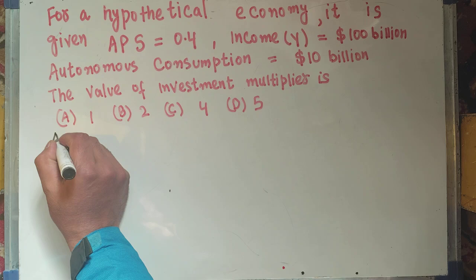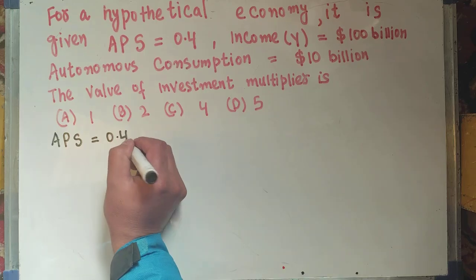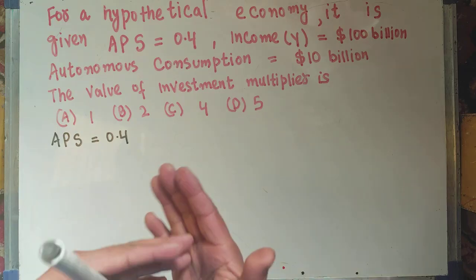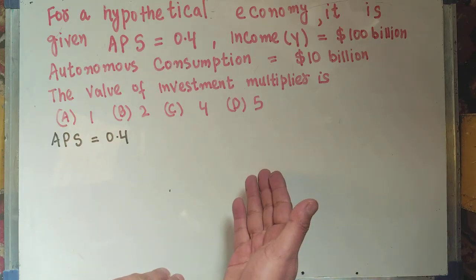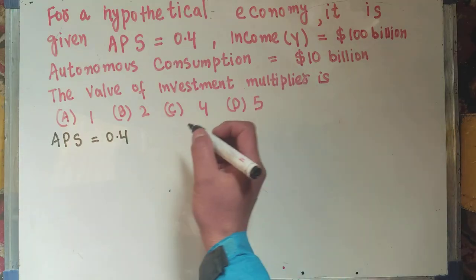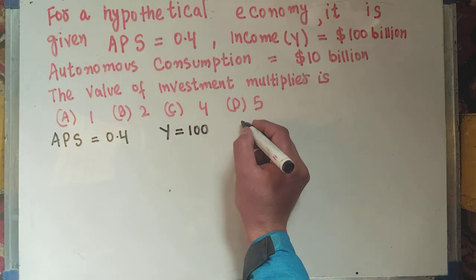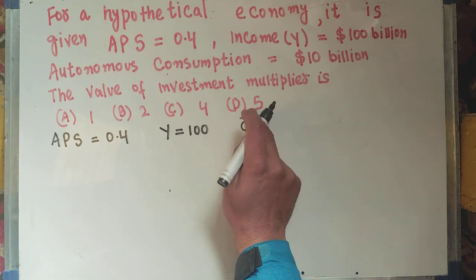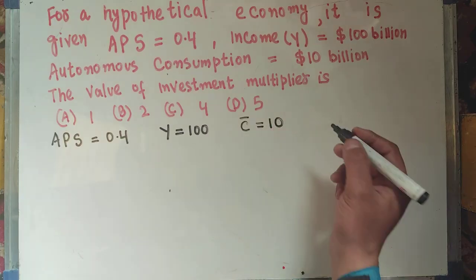We are given the value of average propensity to save, which is equal to 0.4. By average propensity to save, we mean APS shows us the proportion of income that is saved rather than spent on goods and services. This is given as 0.4. Also, income is equal to 100 billion dollars, and autonomous consumption is 10 billion — let us denote it by C-bar, which is equal to 10 billion.